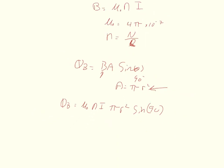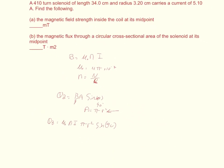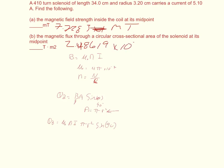When you plug all of that in, for Part A you should get an answer of 7.7283 millitesla. For Part B, you should get 2.48619 times 10 to the negative fifth, and that is in tesla per meter times meters squared.